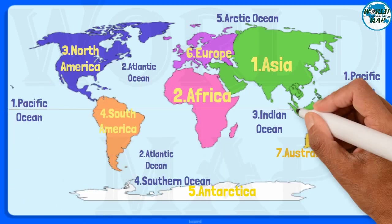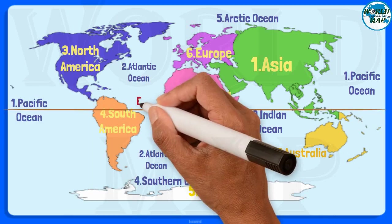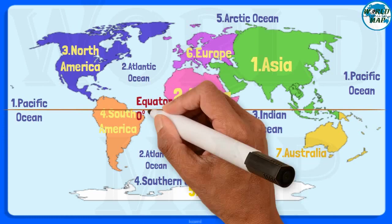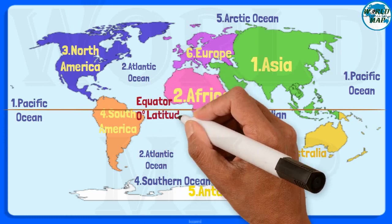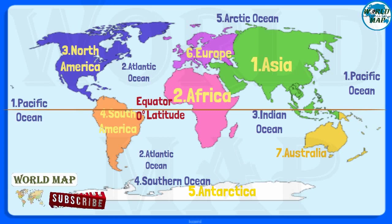Equator. The equator is a circle of latitude that divides a spheroid, such as Earth, into the northern and southern hemispheres. On Earth, the equator is an imaginary line located at zero degrees latitude, about 40,075 kilometers in circumference, halfway between the north and south poles.